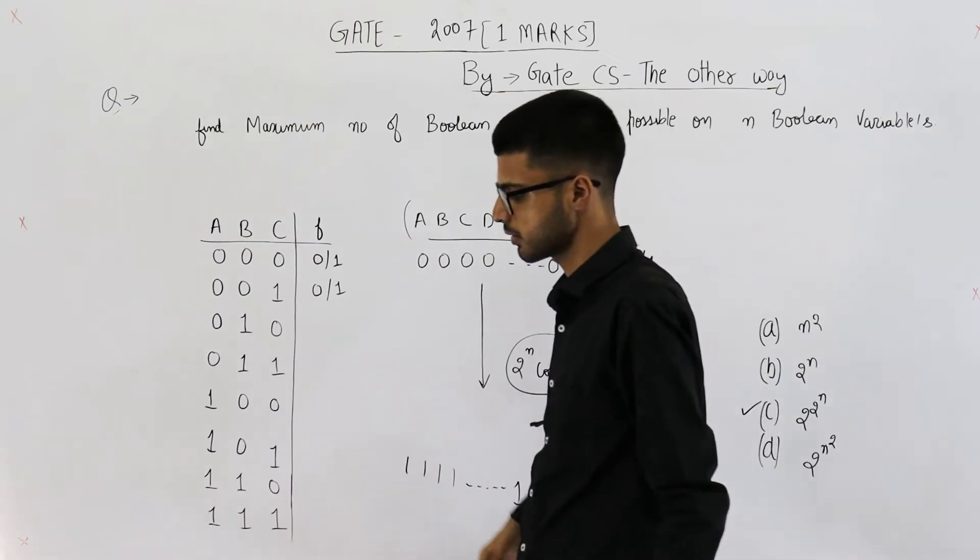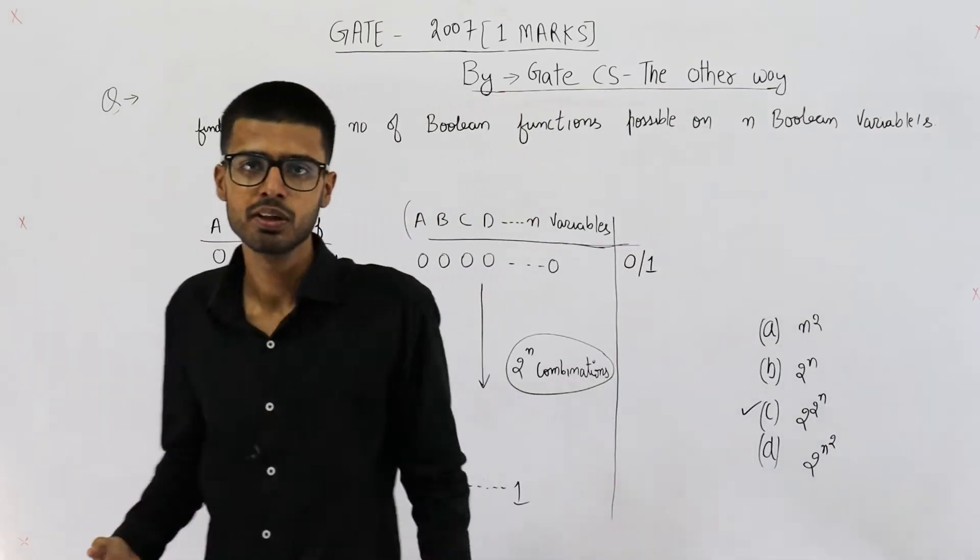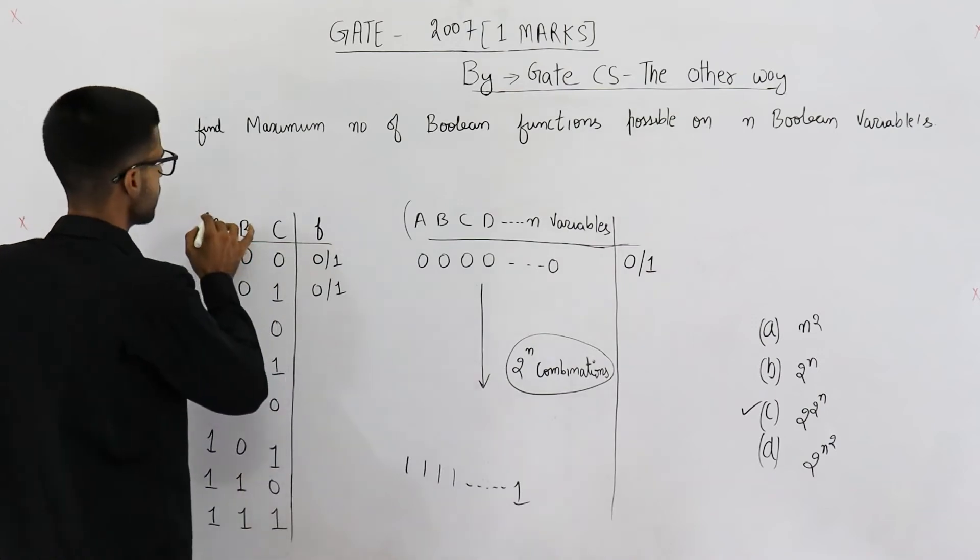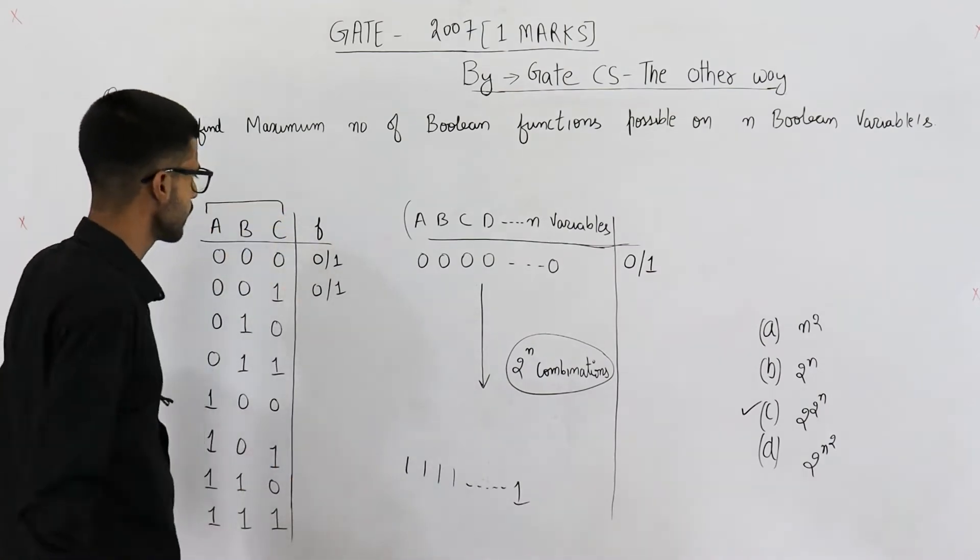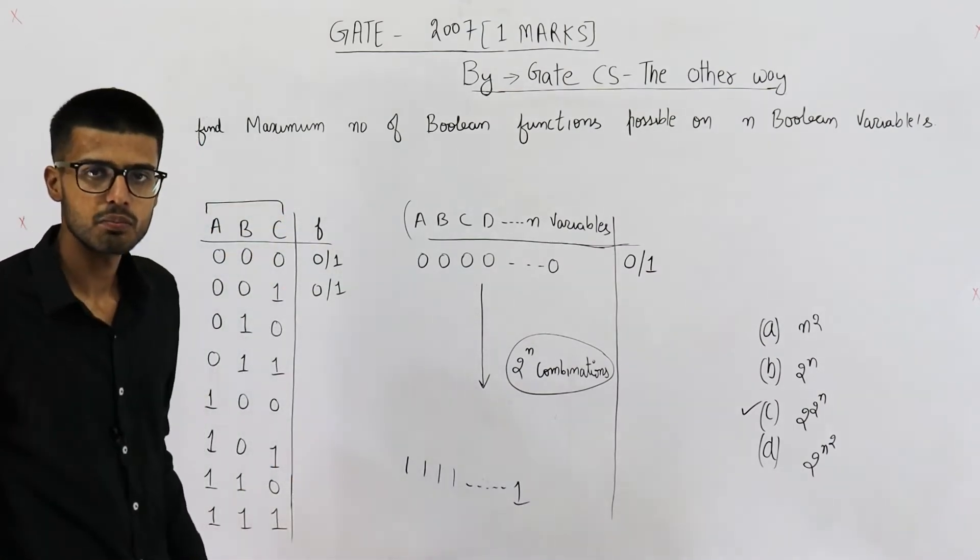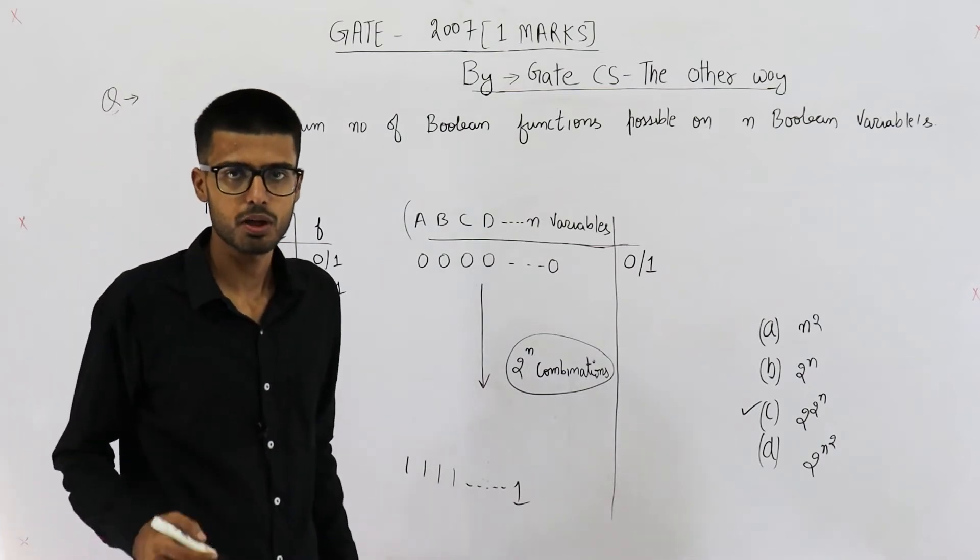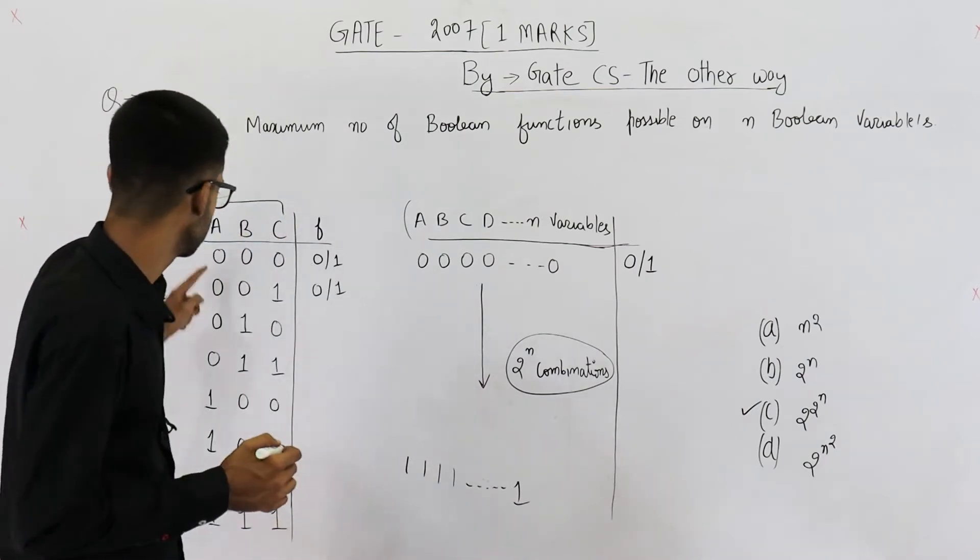Let us consider the case where number of boolean variables are three. These are the three boolean variables. Now with three boolean variables, how many inputs are possible? 2 raised to the power 3 that means 8.